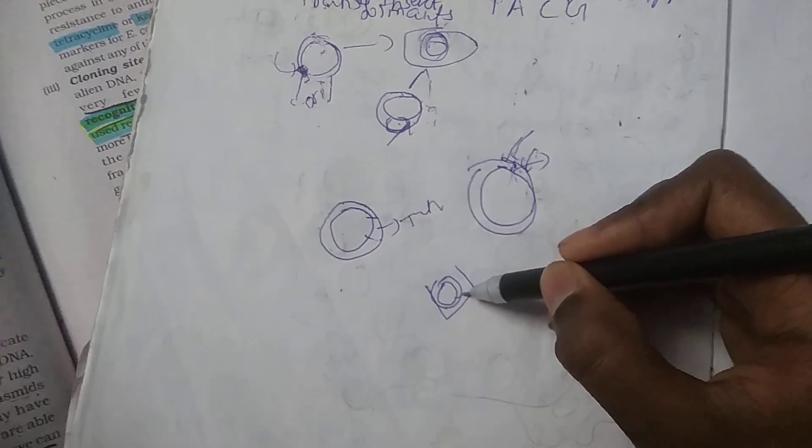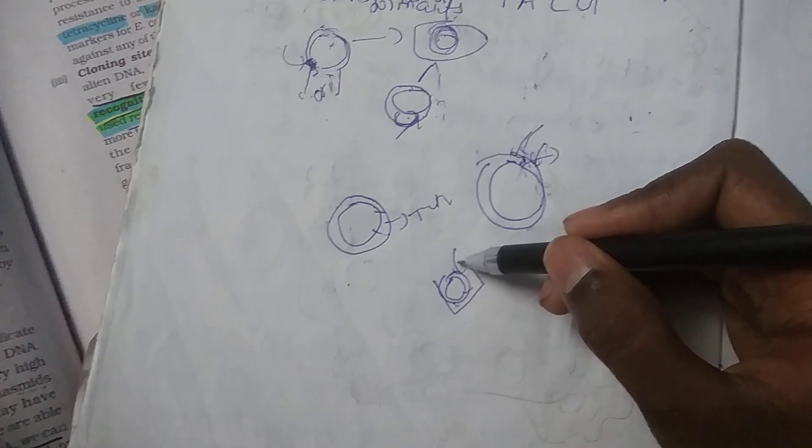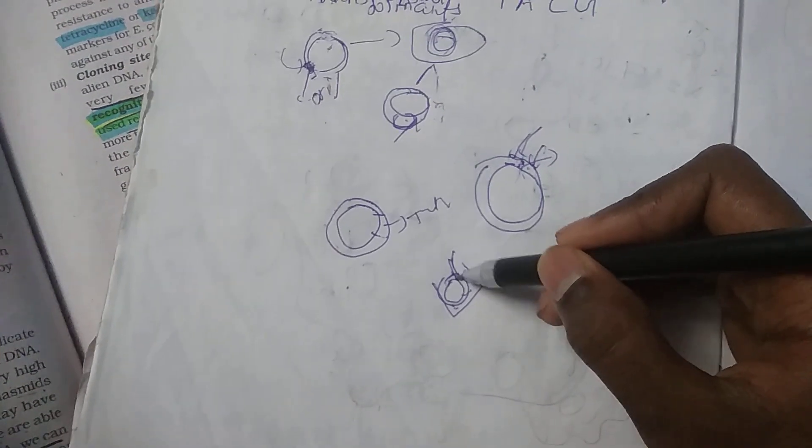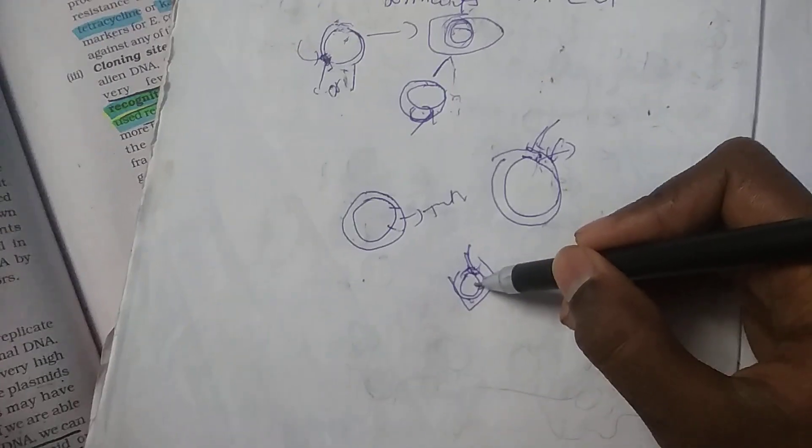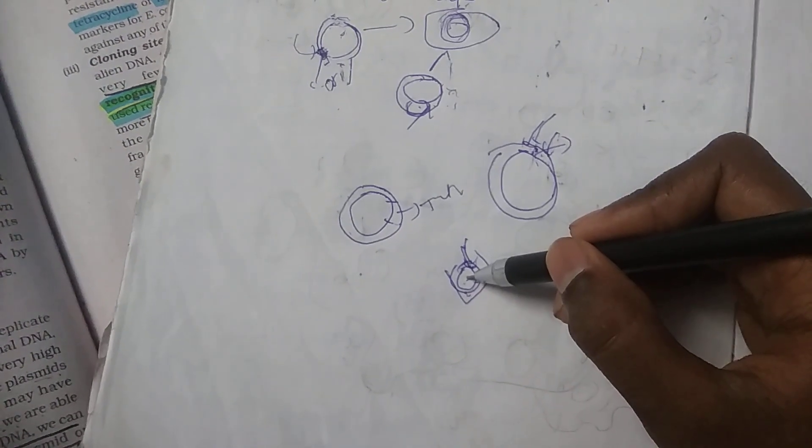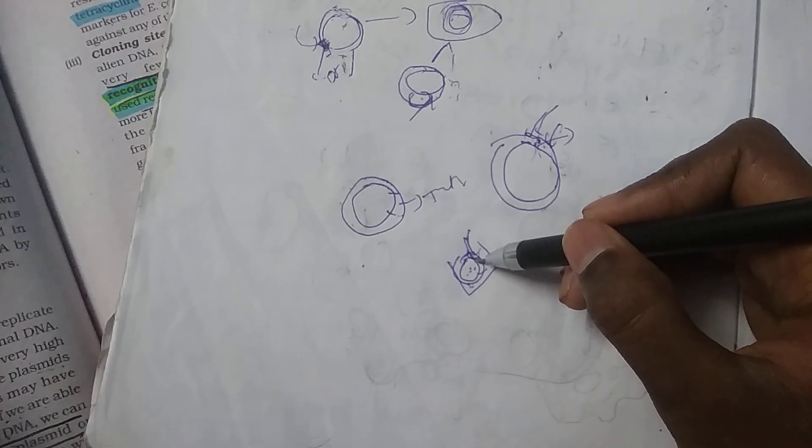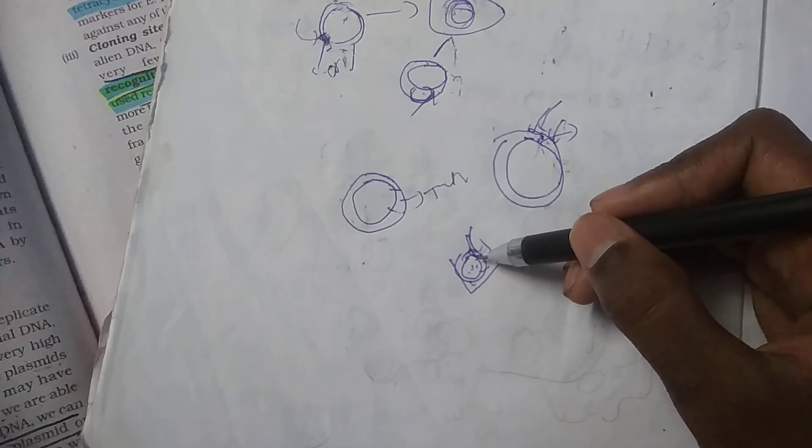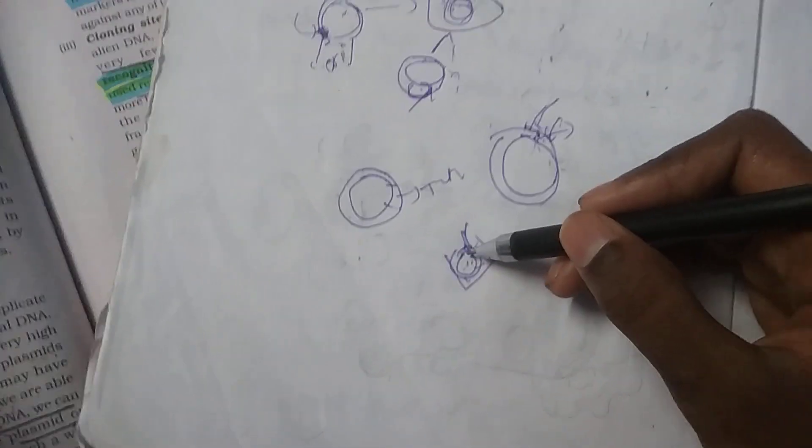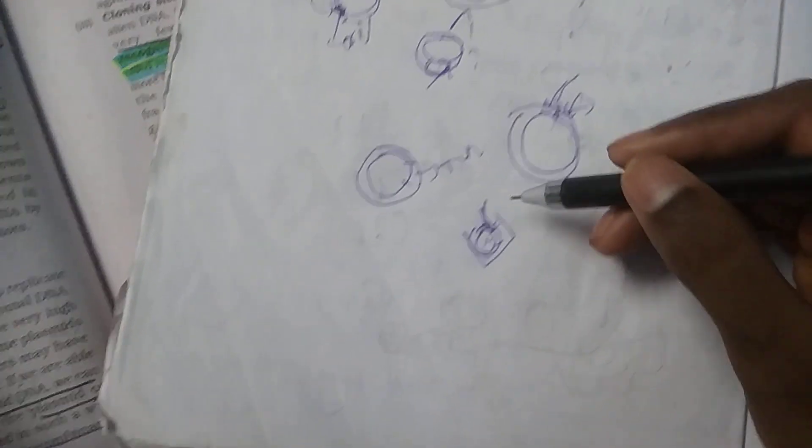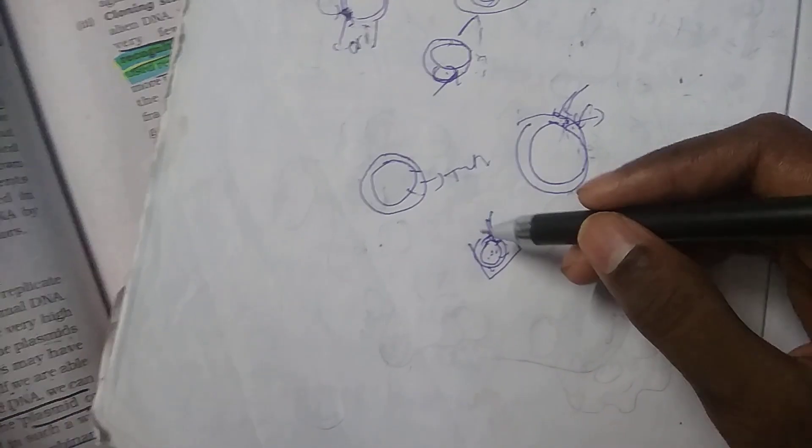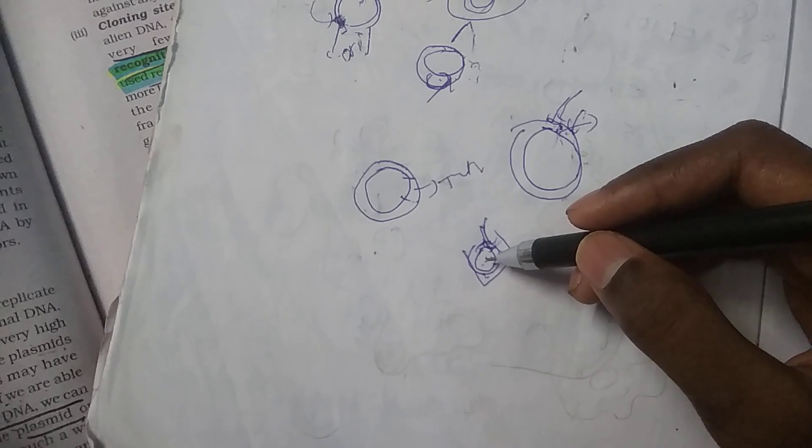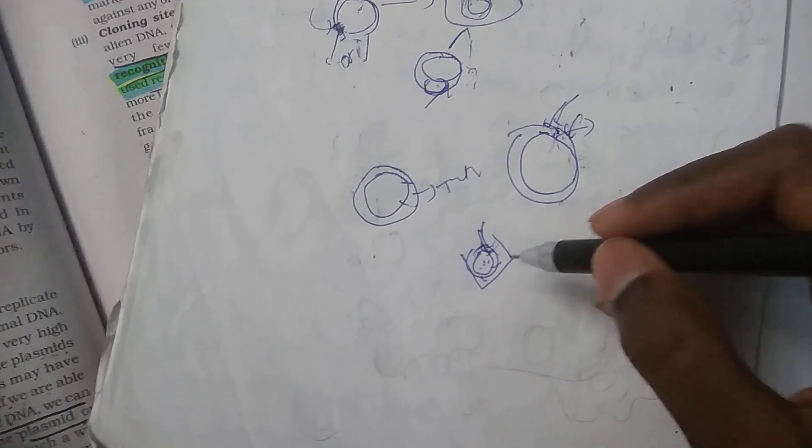I told you the main thing is that this is the ampicillin site. The ampicillin site is on the left side. What I want to do is cut out the site. The plasmid will be cut and the device will be stuck.